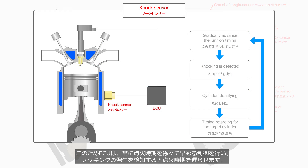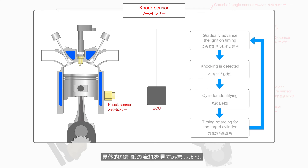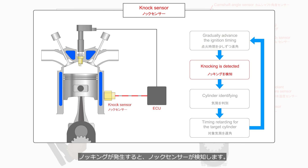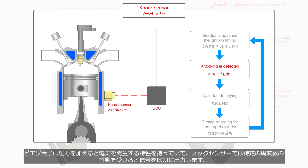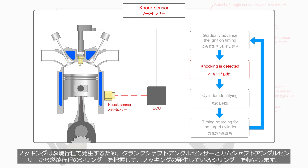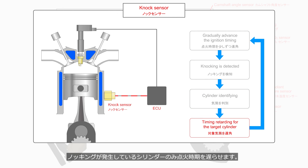Therefore, the ECU constantly performs gradual advancement of the ignition timing, and when it detects knocking, it retards the ignition timing. Under normal conditions, the ECU gradually advances the ignition timing. When knocking occurs, it is detected by the knock sensor, which utilizes a piezoelectric element — a semiconductor that generates electricity when pressure is applied. When the knock sensor receives vibrations at specific frequencies, it outputs a signal to the ECU. Since knocking occurs during the combustion process, the ECU identifies the cylinder where knocking is occurring via the crankshaft angle sensor and camshaft angle sensor, and retards the ignition timing only for that cylinder. Once the knocking subsides, the ECU gradually advances the ignition timing again.